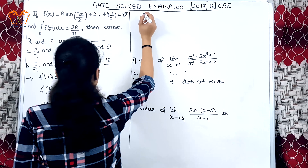We find the derivatives separately. The derivative of sin(x − 4) is cos(x − 4), and the derivative of (x − 4) is 1. Substituting x = 4, we get cos(0)/1 = 1/1. The answer is 1.